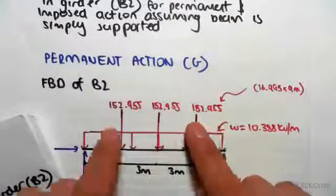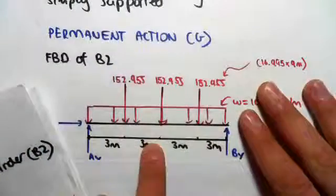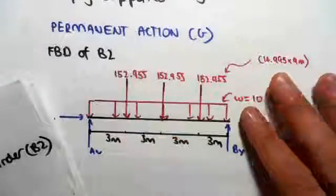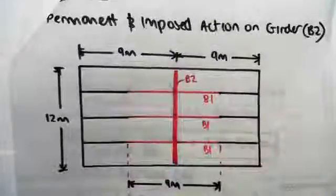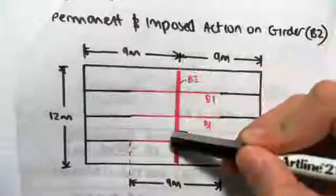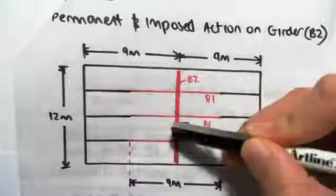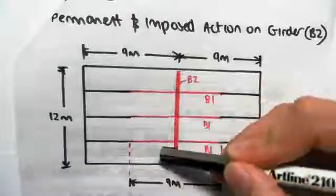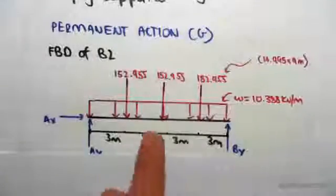So 152.955, those act at three, six, and nine. They act at three meter intervals as shown from this diagram here. We're looking at this beam there. We have point load, point load, point load, and that acts at three, six, nine, and twelve, or just at three meter intervals. So those are the point loads.